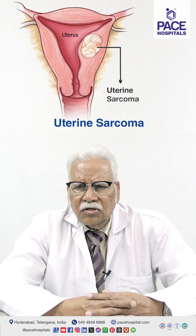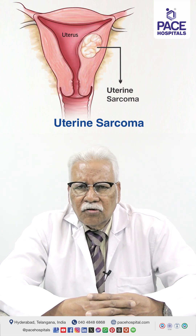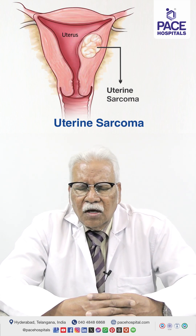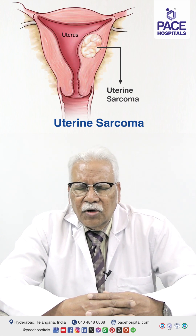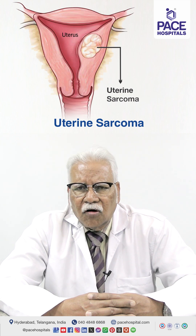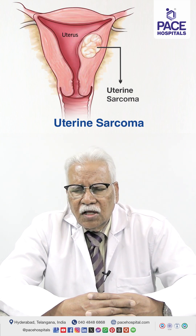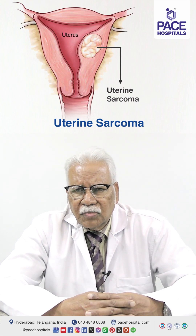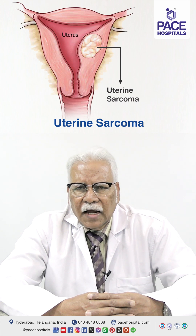Sarcoma means something which arises from the muscle. The uterus has an endometrial lining as the innermost layer, then a muscular layer, and then a thin sheet called the serosa, otherwise called the peritoneal covering. This innermost layer, the endometrium, is the commonest site for uterine cancer. From the muscle of the uterus, sarcoma may arise at times, accounting for about 5 percent of cases — so out of 100 cases of uterine cancer, maybe 5 are sarcomas.